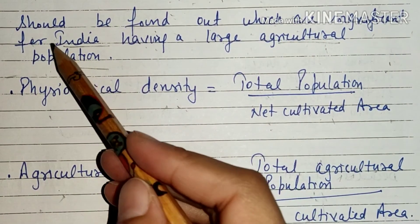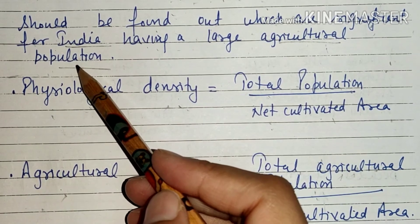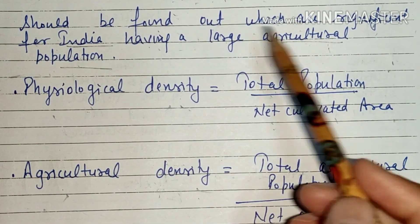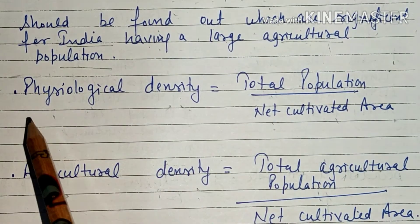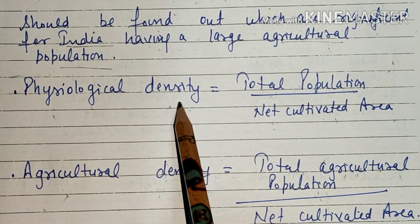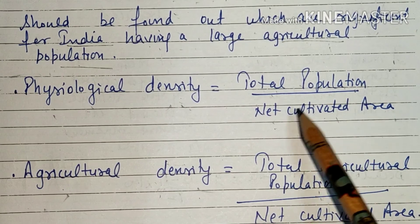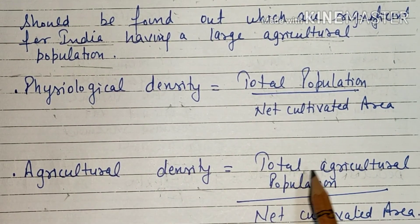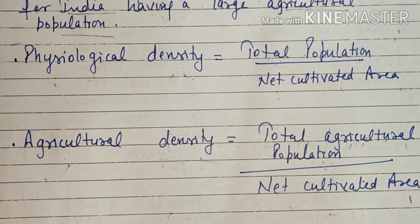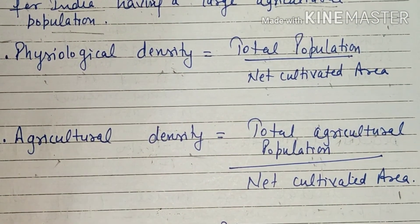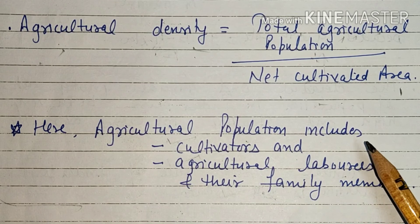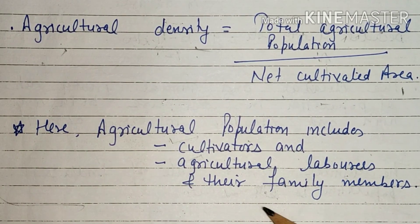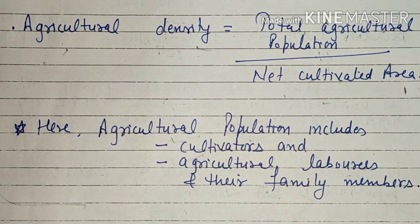These three measures are significant for India, which has a large agricultural population. Physiological density is calculated as total population divided by net cultivated area. Agricultural density is total agricultural population divided by net cultivated area. The agricultural population includes cultivators, agricultural laborers, and their family members. This concludes our topic on density of population.